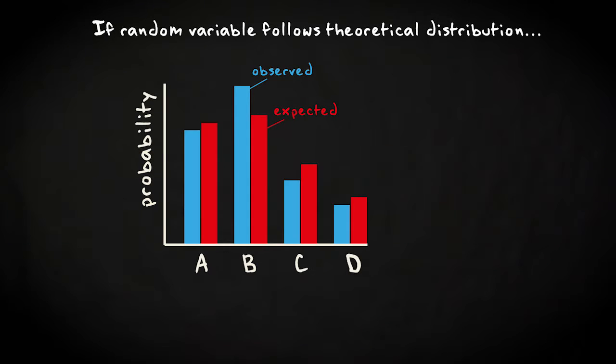If the random variable were following the theoretical distribution, then a large value of the test statistic, relative to the degrees of freedom, would be a very unlikely outcome. So a large value of the test statistic is associated with a small p-value, and leads to rejection of the null hypothesis.